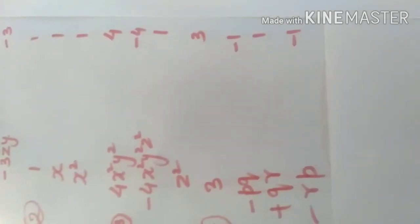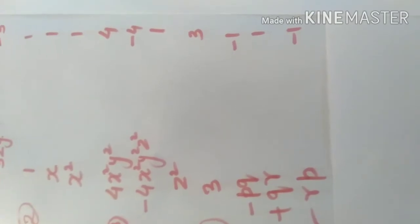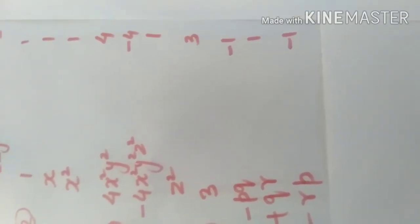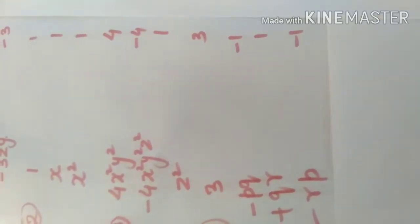Next is 3 minus PQ plus QR minus RP. And so these are the different terms and their corresponding coefficients are 3, minus 1, 1 and minus 1.